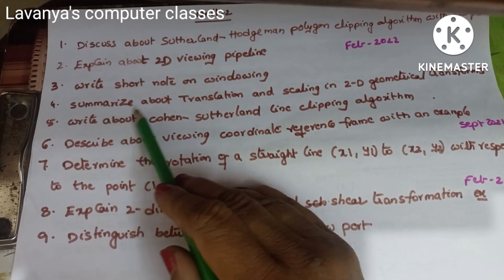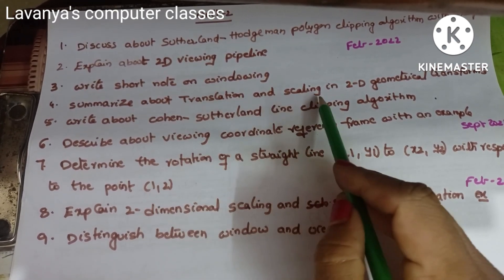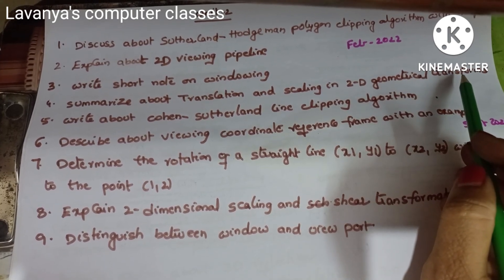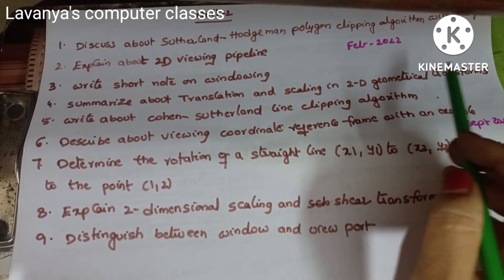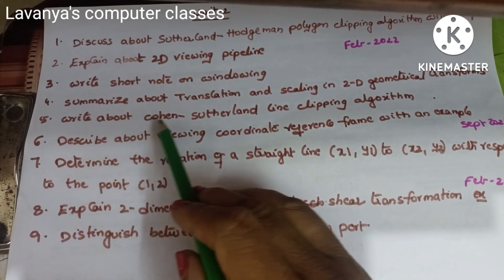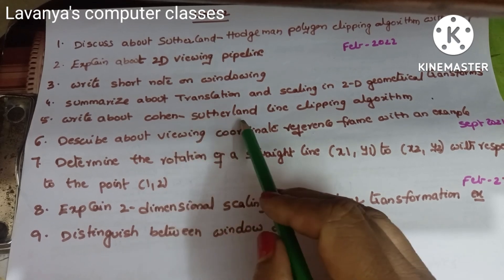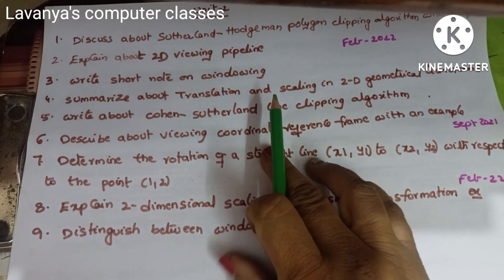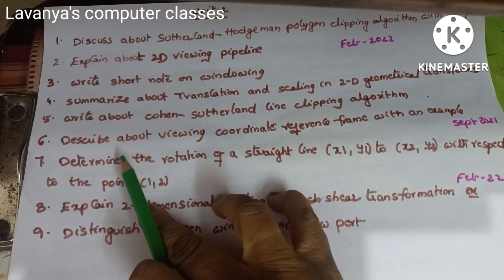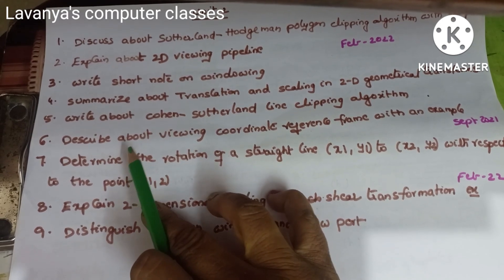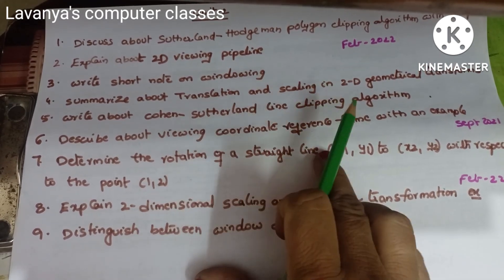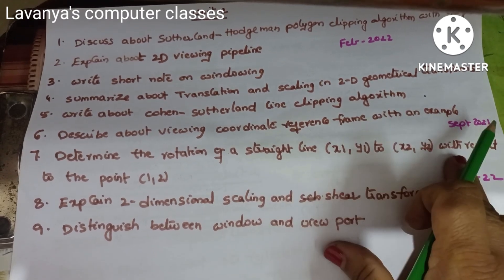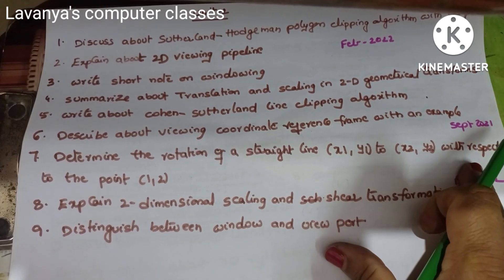Fourth, summarize about translation and scaling in 2D geometrical transformations. Fifth, write about the Cohen-Sutherland line clipping algorithm — this is very important. Sixth, describe about viewing coordinate reference frame with an example. These questions came in September 2021.